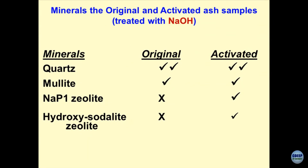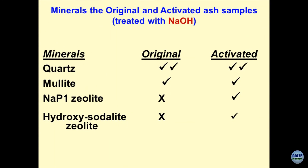If you take the original ash, you will find quartz, mullite, and what are known as zeolites — activated states of minerals where the sodium-alumina ratio is in some order. Once you boil it with sodium hydroxide, you get what is known as activated fly ash. Activated fly ash is a catalyst. This is the after-effect of activation of fly ash with sodium hydroxide.